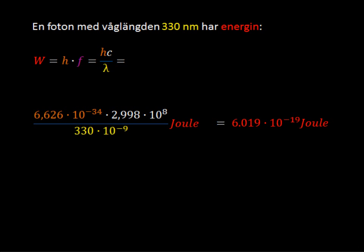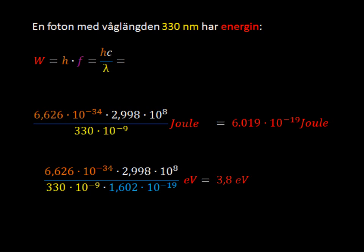We've started off in the initial problem with electron volts, and either one is actually fine because they're both energy. But in this particular one we started off with electron volts, so let's convert what we have into electron volts as well. Electron volts is also very convenient when dealing with single photon events, because when you're dealing with such a small amount of energy, it can be inconvenient to use joules. Both are valid — it's just different things for different times. When you have joules, it's easy to convert if you just use this conversion factor. We take the energy that we have and divide by 1.6 times 10 to the minus 19, and that converts it into electron volts.